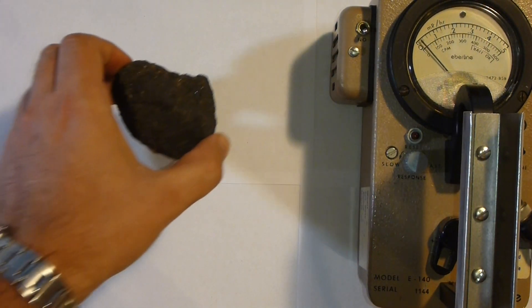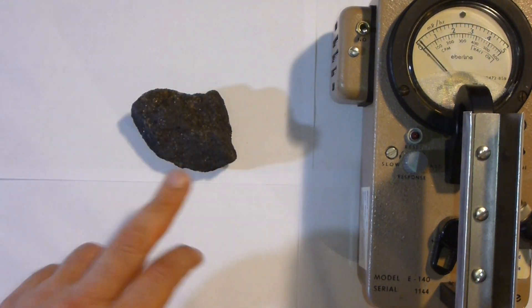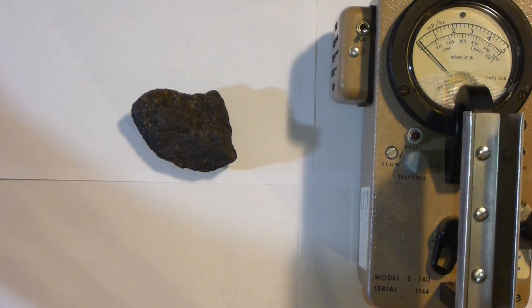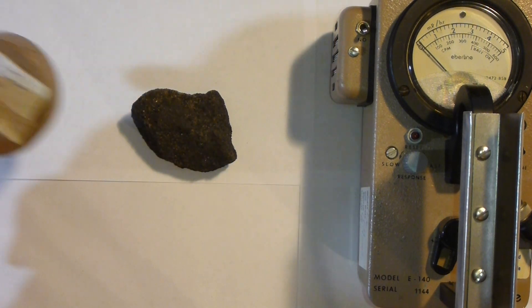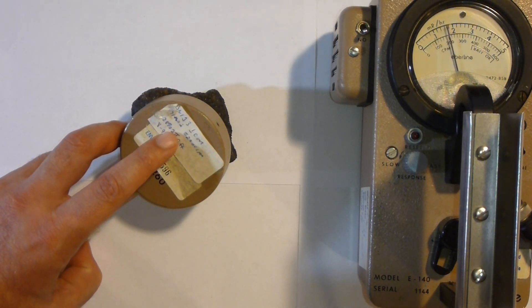Next, here's a different ore. This is pitch blend. It's more of a crystalline mineral. And I'll again put the probe right on there. This one also about 4 to 5 millirem per hour.